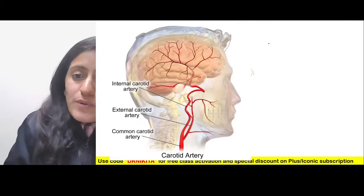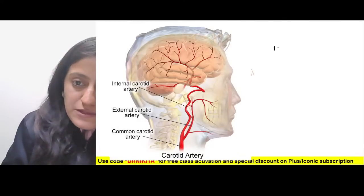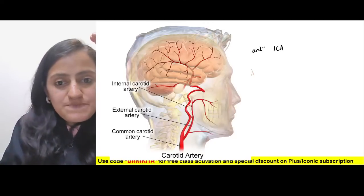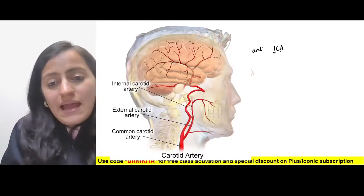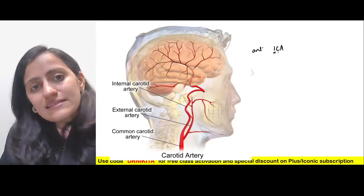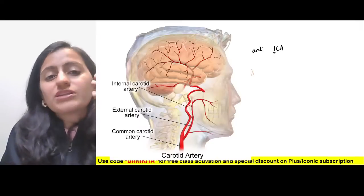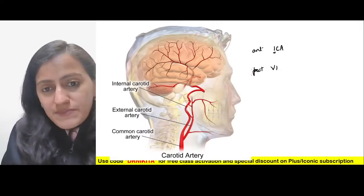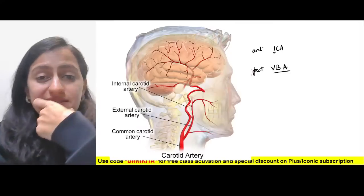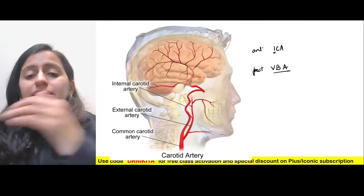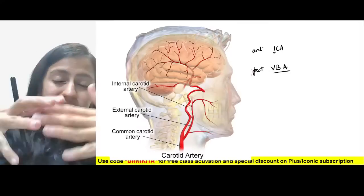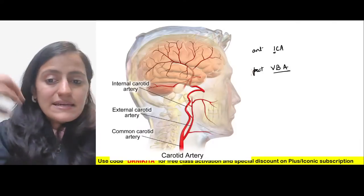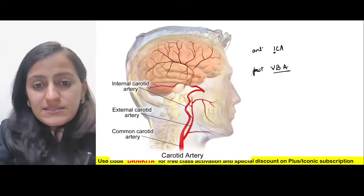For the brain, the two major arteries are: the anterior circulation, which is the carotid — specifically the internal carotid artery (ICA), not the external carotid — and the posterior circulation, which is the vertebral basilar system. The vertebral artery joins to form the basilar, then gives the PCA.